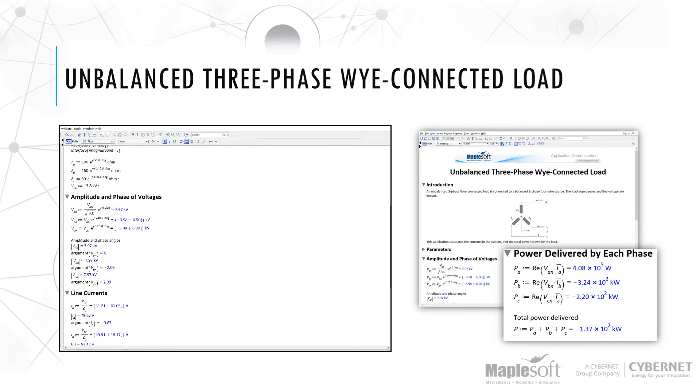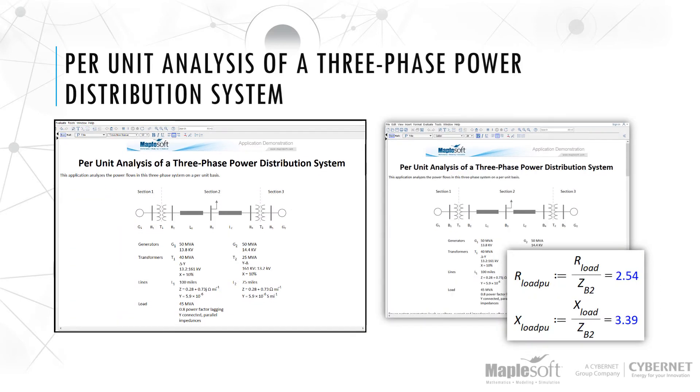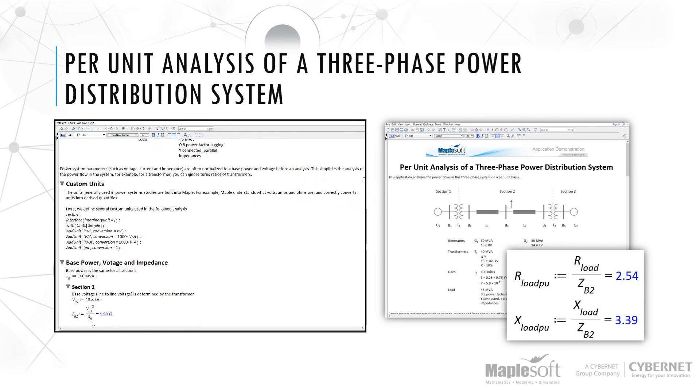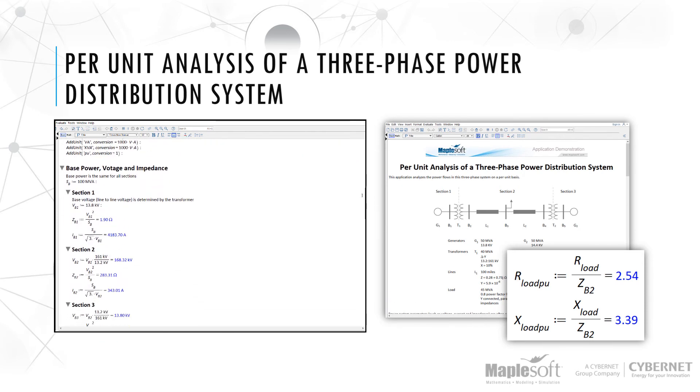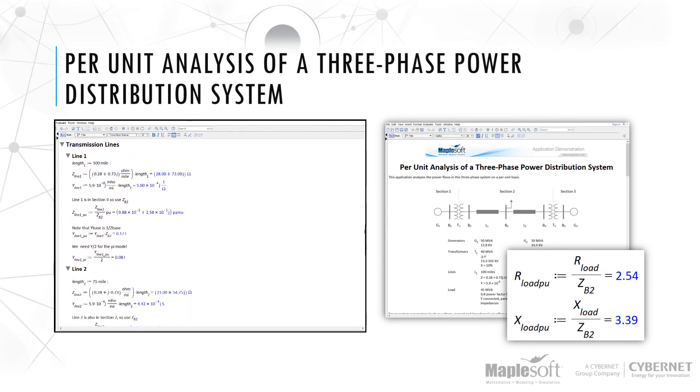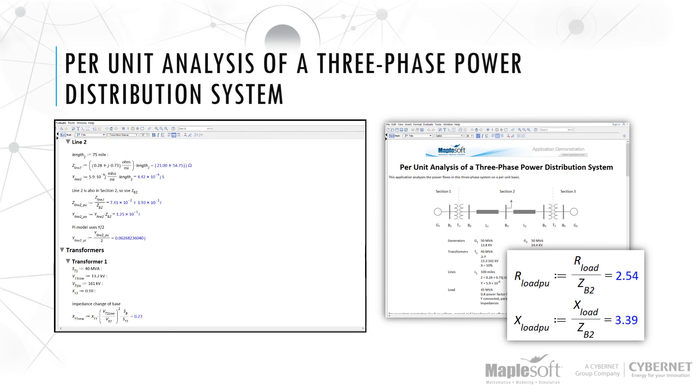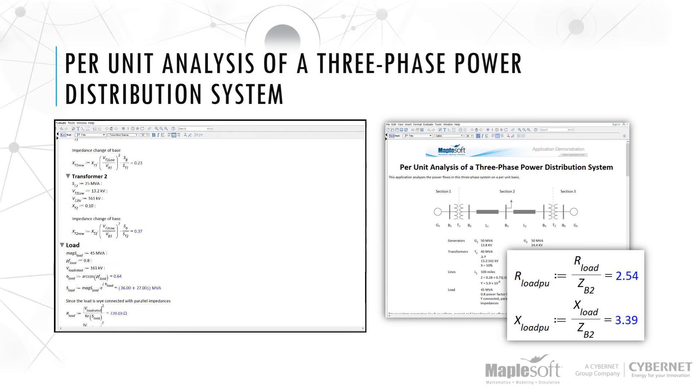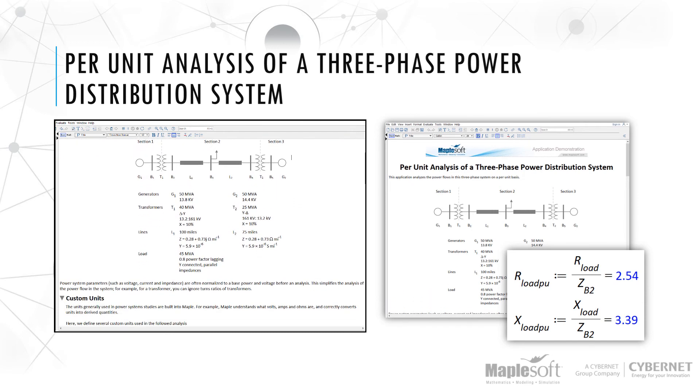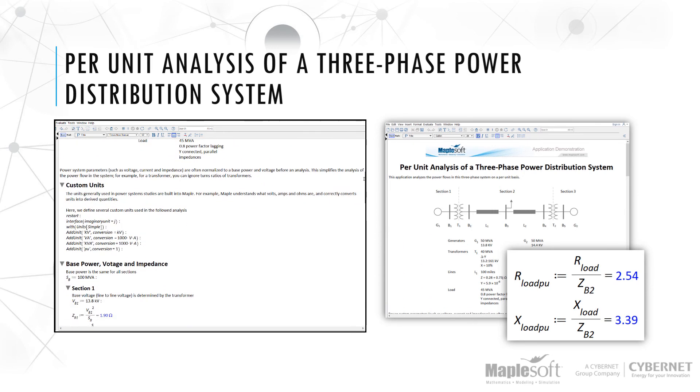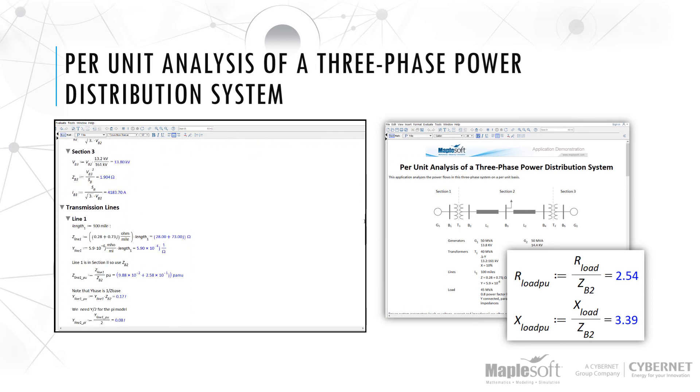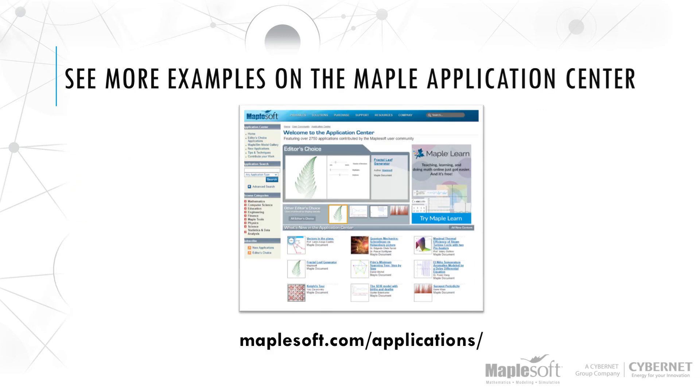Per unit analysis of a three-phase power distribution system. This application analyzes the power flows in this three-phase system on a per-unit basis. Power system parameters such as voltage, current, and impedance are often normalized to a base power and voltage before an analysis. This simplifies the analysis of the power flow in the system. This application also makes use of Maple's built-in unit system, where units are streamlined throughout the entire set of calculations.